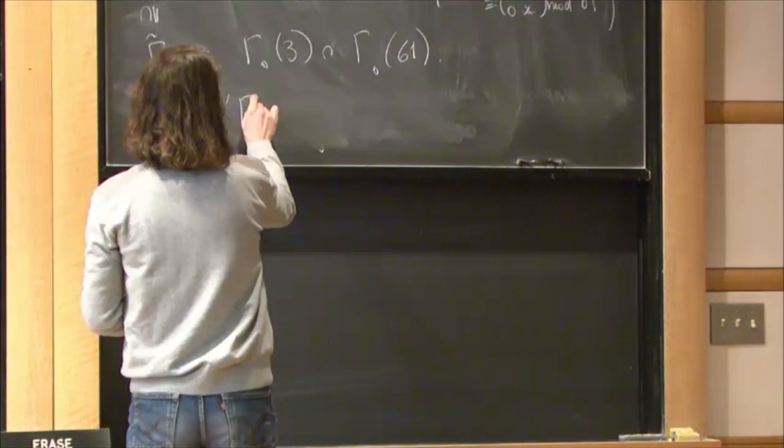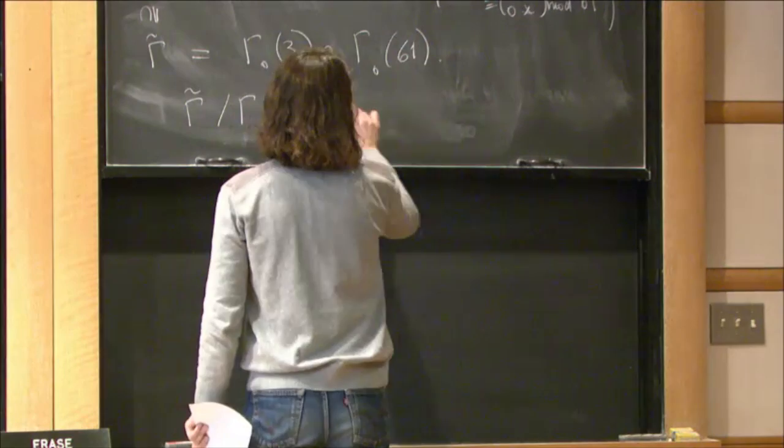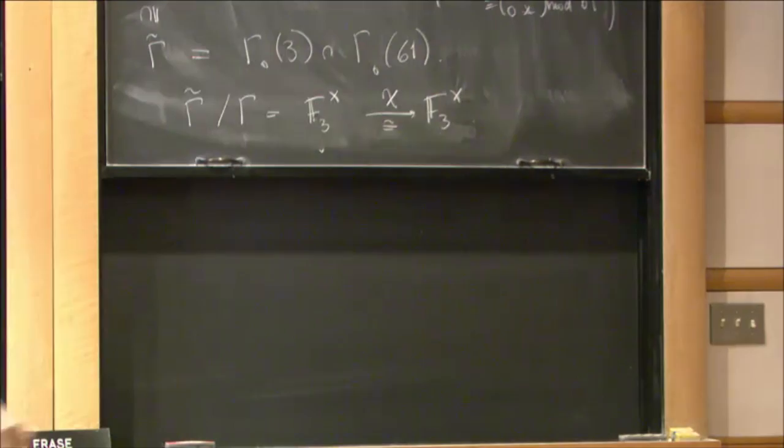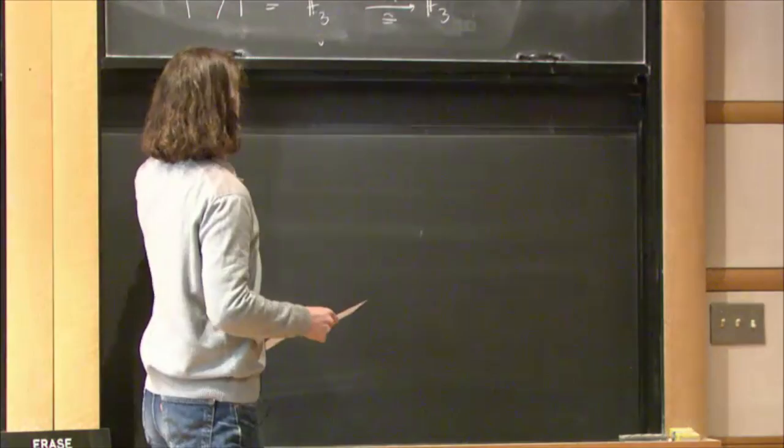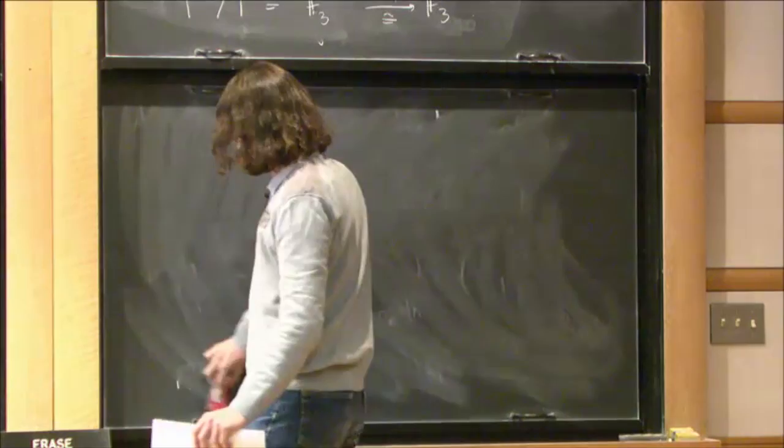And so, this is a normal subgroup. And the quotient is just given by this diagonal element here. So, it's just F three cross. And I will denote the identity character to F three cross by pi.